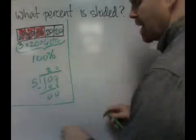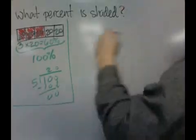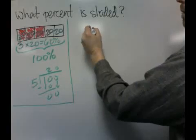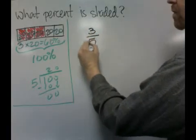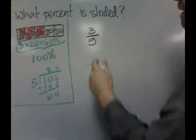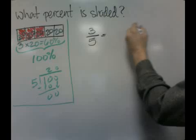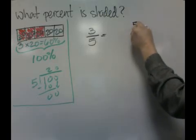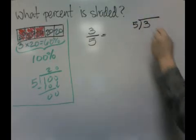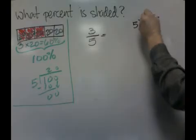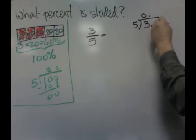Another technique is to say we've learned earlier that we could write that as three-fifths, and we've learned that a fraction can be converted into a percent by dividing. So you would do 5 into 3. 5 goes into 3, 0 times, so you have to add a decimal and a 0.